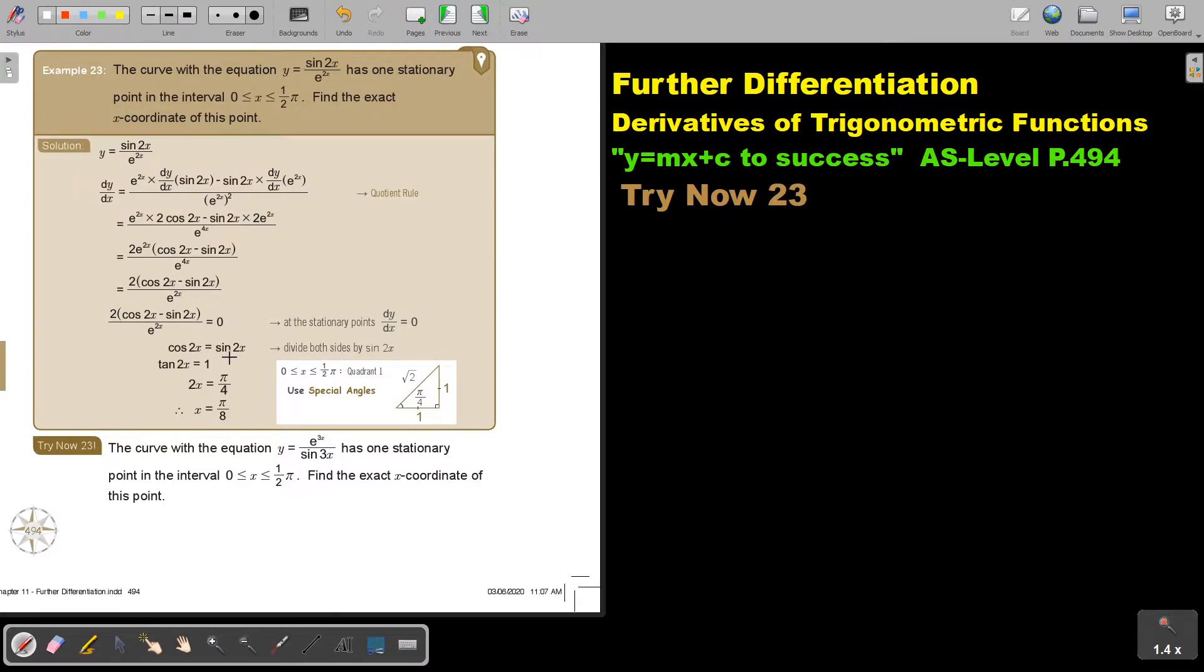Let's look at another example. The curve with the equation this function has one stationary point in the interval. This is very nice because it's just the first quadrant and also take note it's in radians. Find the exact X coordinate of this point. So not the full coordinates, just the X value.